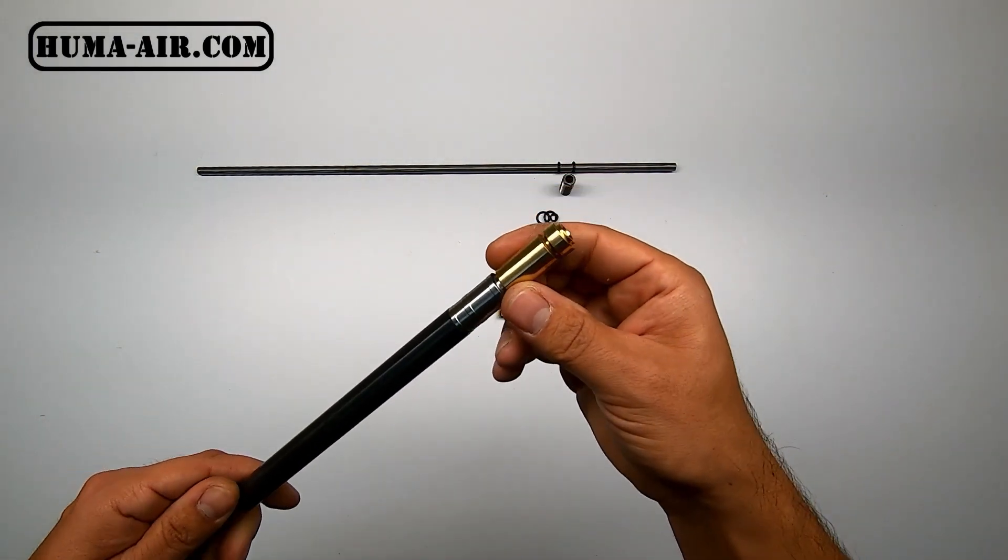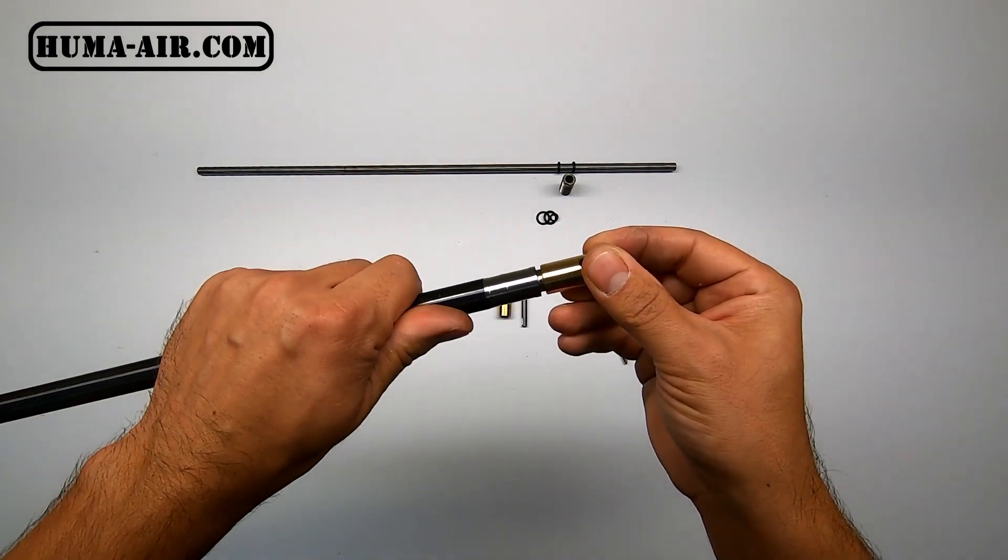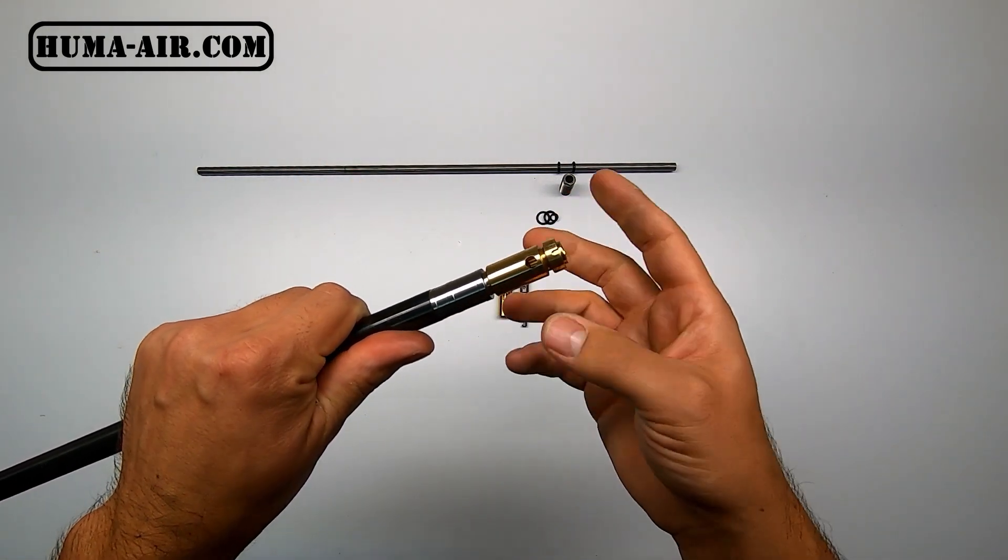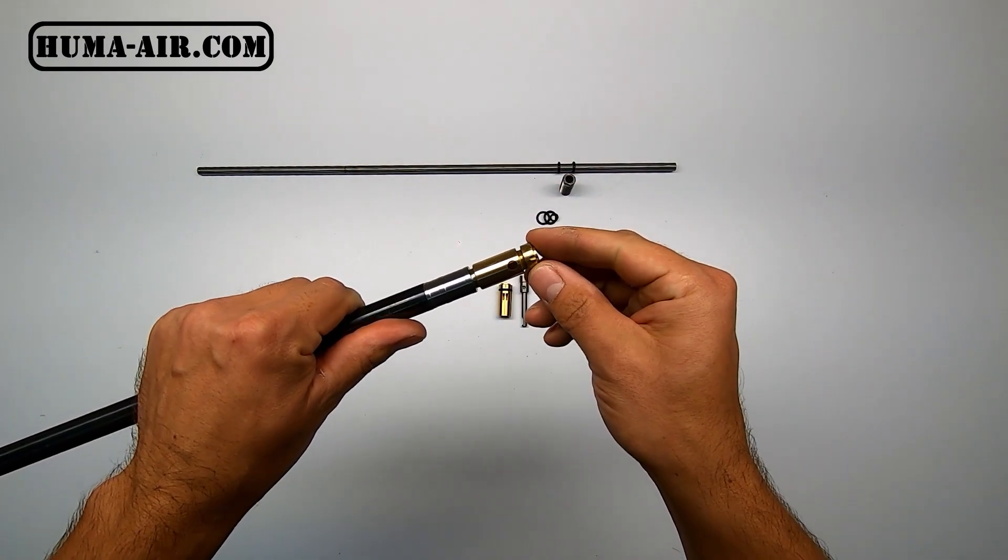Now it's time to remove the original transfer port. This piece is Loctite on. So what I like to do is to clamp it in a vise, heat it up so the Loctite gets soft, and then we can just undo it. Follow me to the bench and I'll show you.